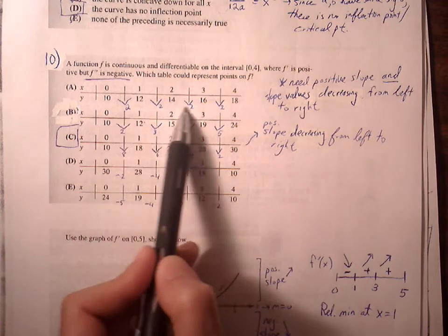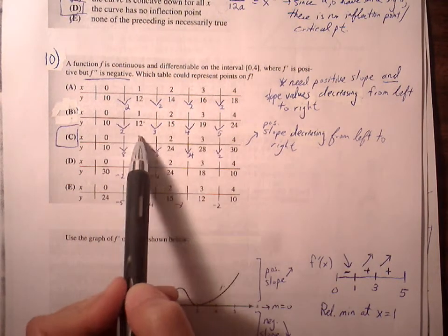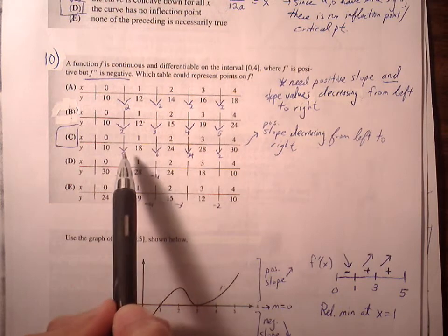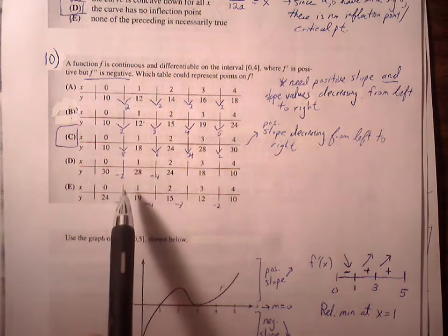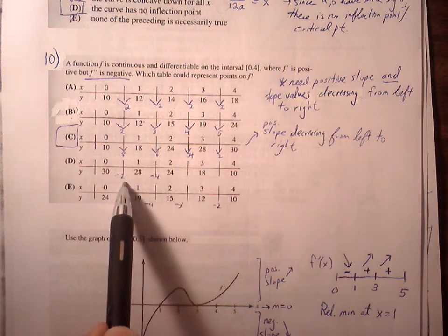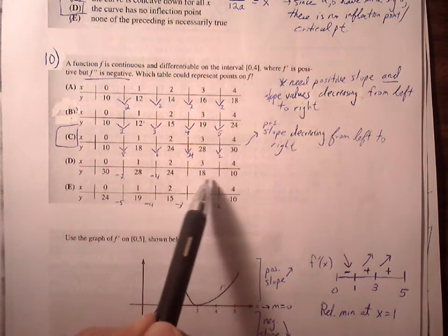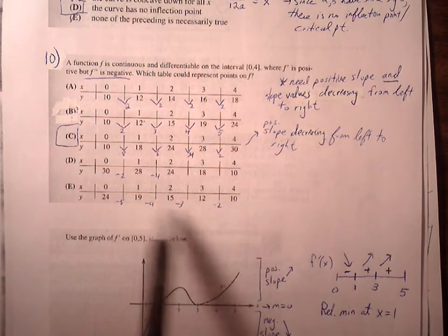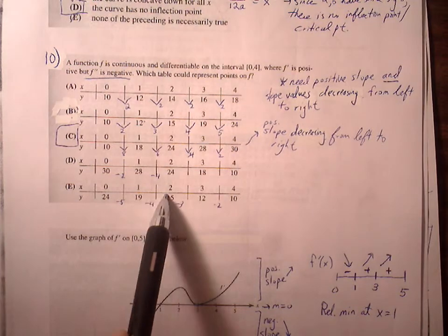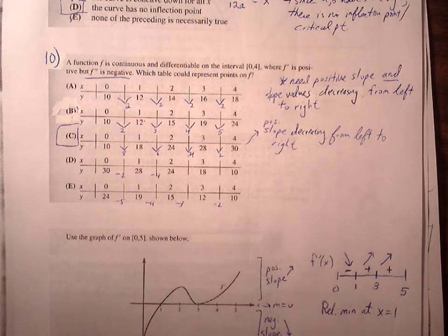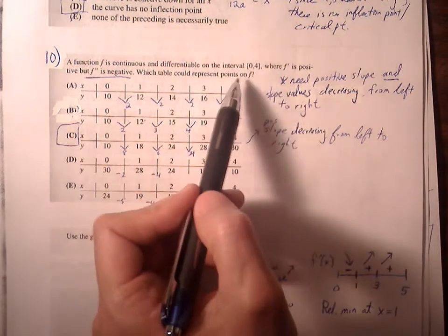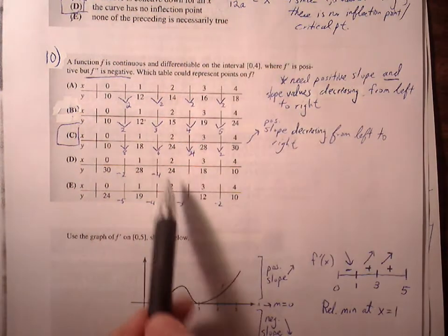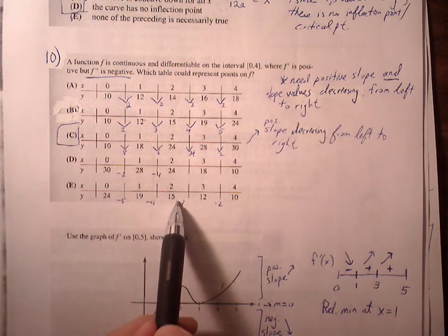Looking at the tables: one option shows all slopes of 2. Another shows slopes 2, 3, 4, 5. Another shows 8, 6, 4, 2. Another shows negative 2, negative 4, negative 6, negative 8. And another shows negative 5, negative 4, negative 3, negative 2. These represent the change in y between consecutive ordered pairs. We need positive slope, so D and E are out. We're down to A, B, and C.